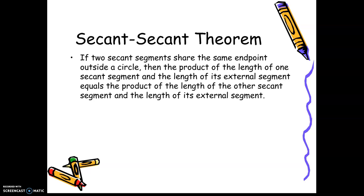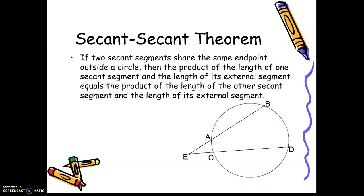The secant-secant theorem is when you have two secant segments going through a circle and they share the same endpoint outside the circle. You're going to multiply the part on the outside times the whole secant, and that's going to equal the part on the outside times the whole length of the other secant. So EA times the whole length of EB equals the part on the outside times the whole length of ED.